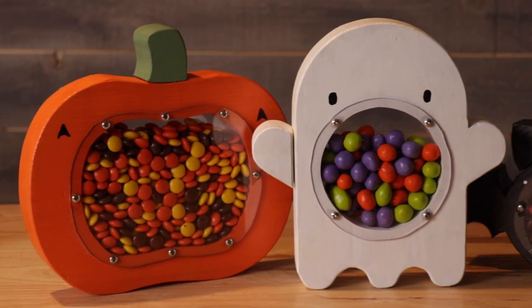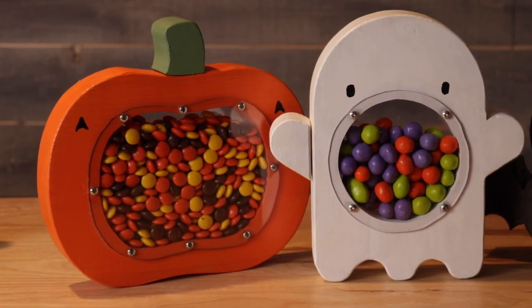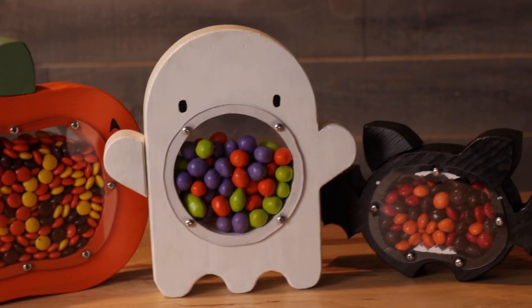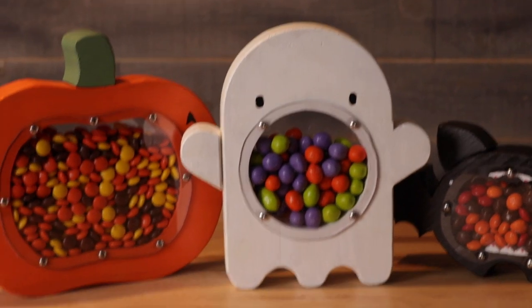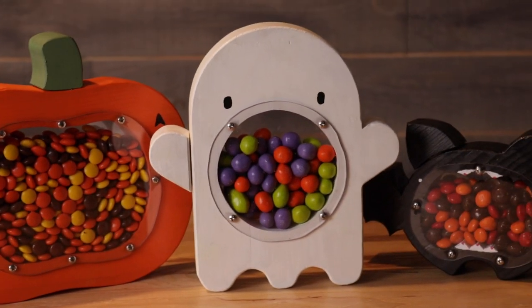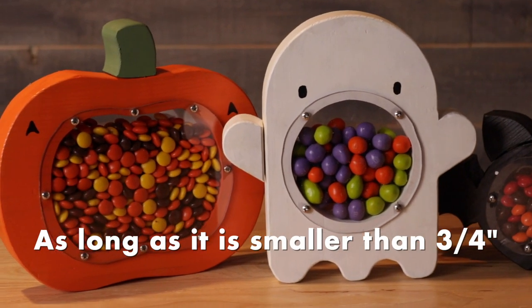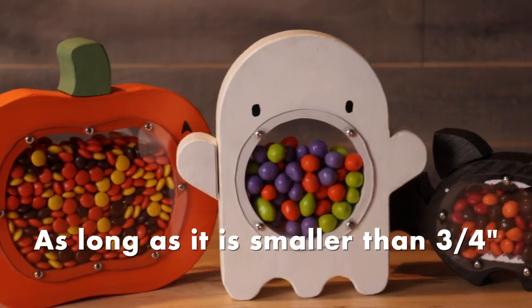Today I'm going to show you how to make these simple wooden Halloween candy holders that kind of double as decorations. Got three different styles: a jack-o'-lantern, a glow-in-the-dark ghost, and a bat. You can fill them with whatever candy you want, and my kids think they're pretty cool.